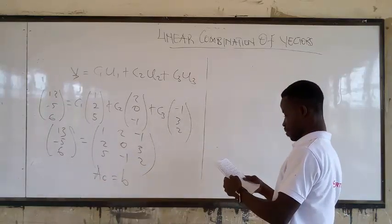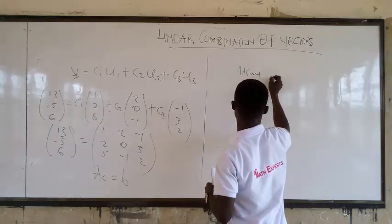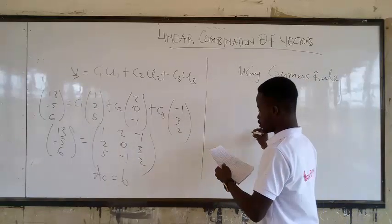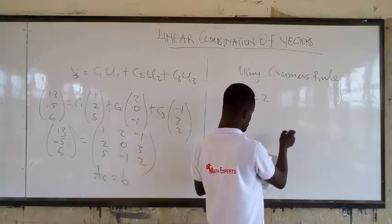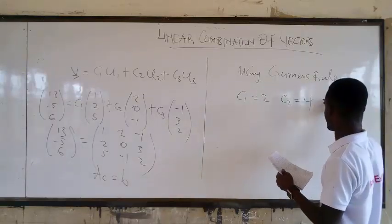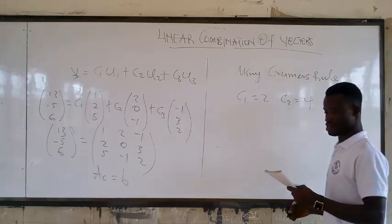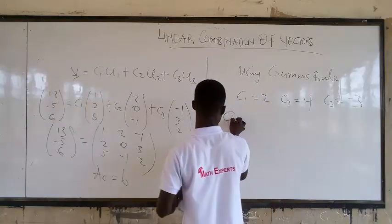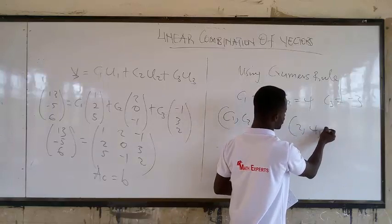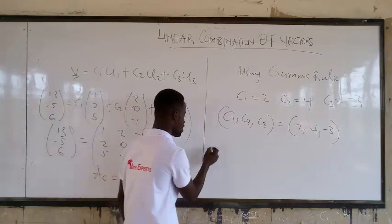Cramer's rule. So with Cramer's rule, when you do that, using Cramer's rule, you are going to get C1 to be 2, C2 to be 4, C3 to be negative 3.